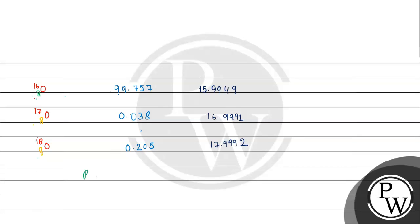Now, if we want to find relative mass, then what will we do? We will take their percentage of abundance: 99.757 and multiply their isotopic mass 15.9949, plus 0.038 into 16.9991, plus 0.205 into 17.9992.